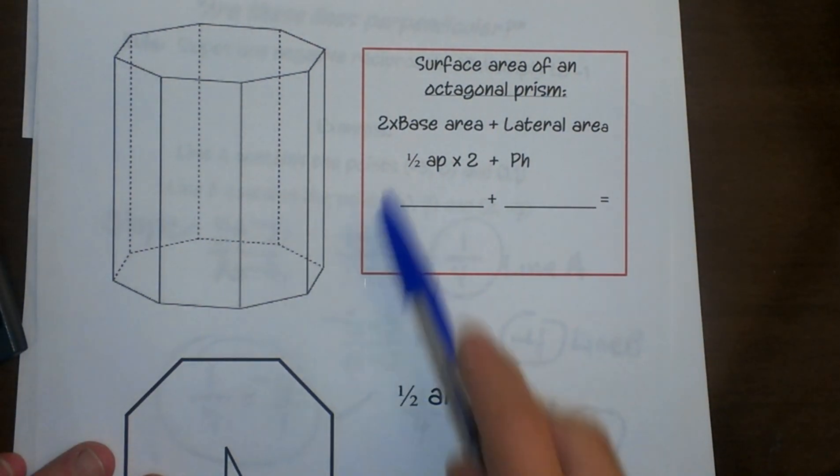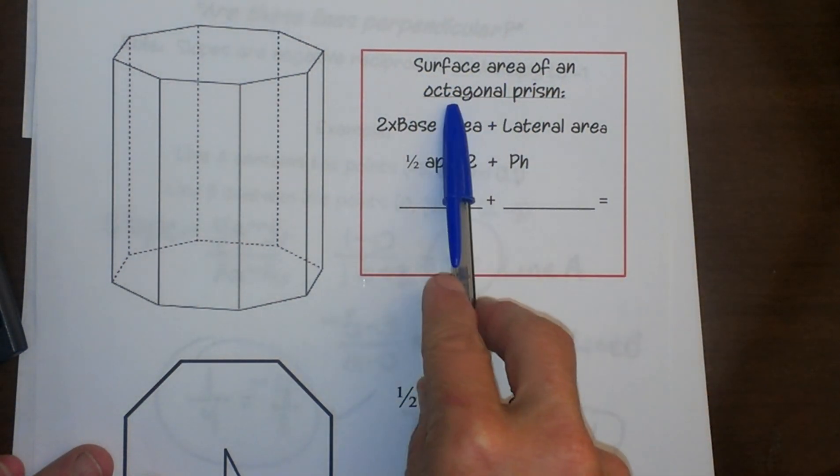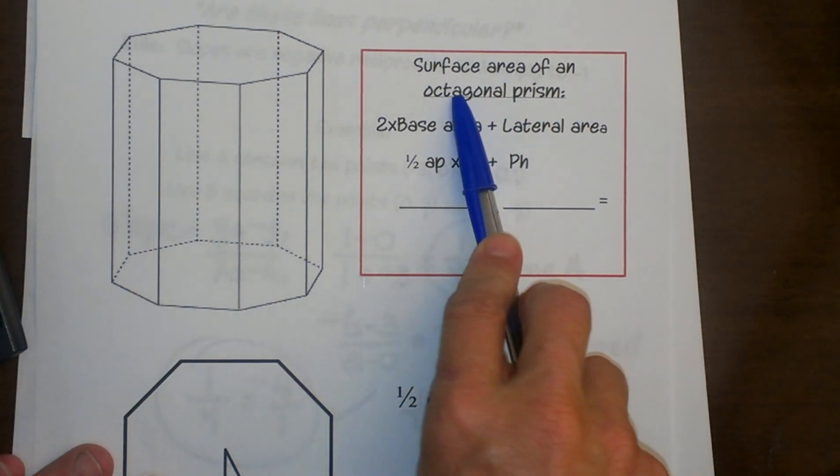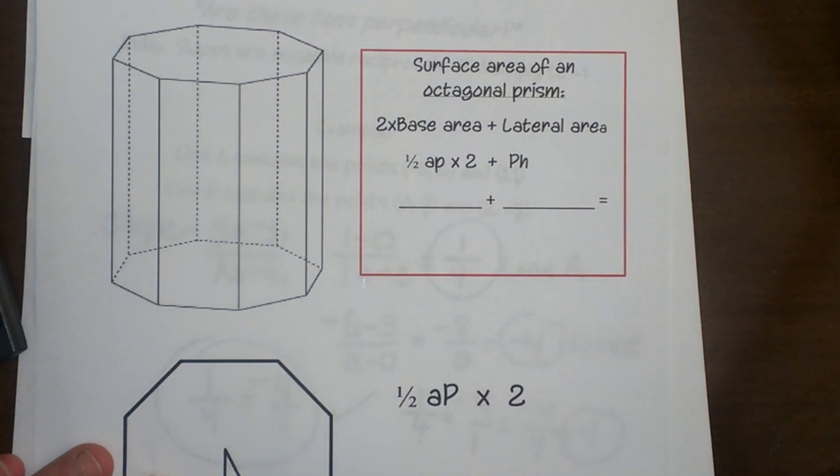Hi, welcome to Moo Moo Maths. Today we're looking at finding the surface area of an octagonal prism. This is actually a request from a viewer, so here you go.